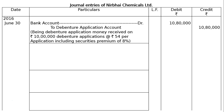The company issued Rs. 10,00,000 debentures of Rs. 50 each at a premium of 8%. 8% of Rs. 10,00,000 is Rs. 80,000. Hence on June 30th, the first entry will be Bank Account debited to Debenture Application Account, being debenture application money received on Rs. 10,00,000 debenture applications at the rate of Rs. 54 per application including securities premium of 8%. The total is Rs. 10,80,000. This is the receipt entry.